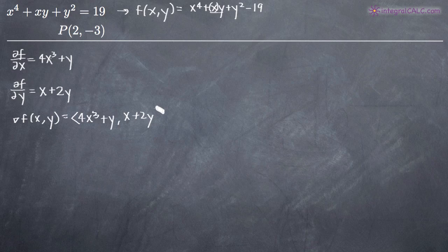So that's our gradient vector but we want to evaluate our gradient vector at the point that we're interested in which is 2 negative 3. So instead of f of x comma y we say f of 2 comma negative 3. So we plug in 2 for x and negative 3 for y.